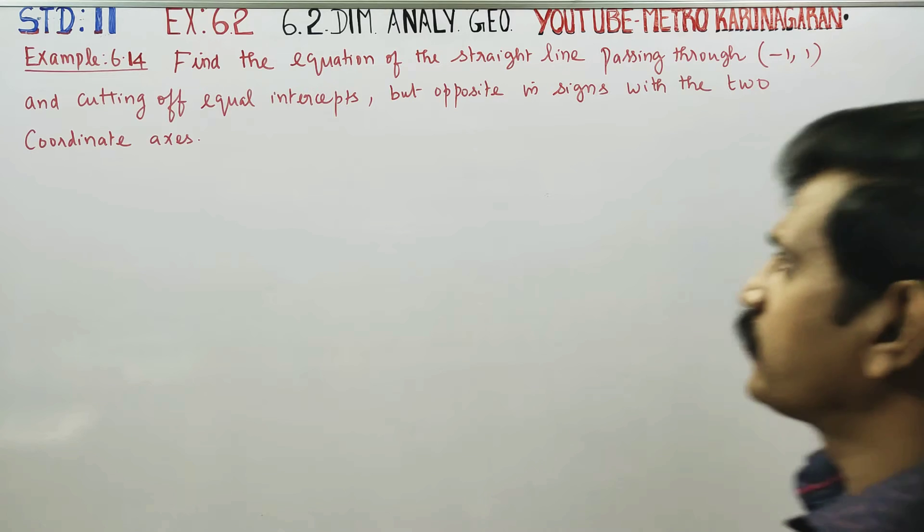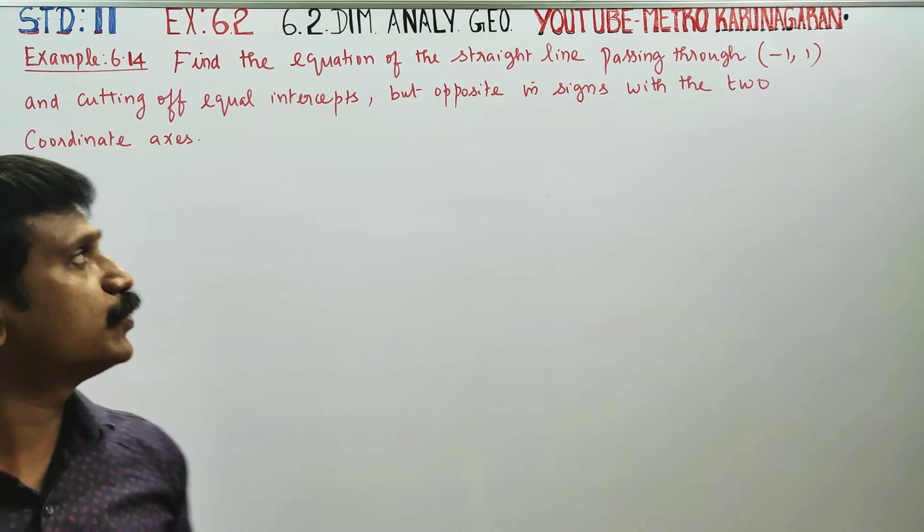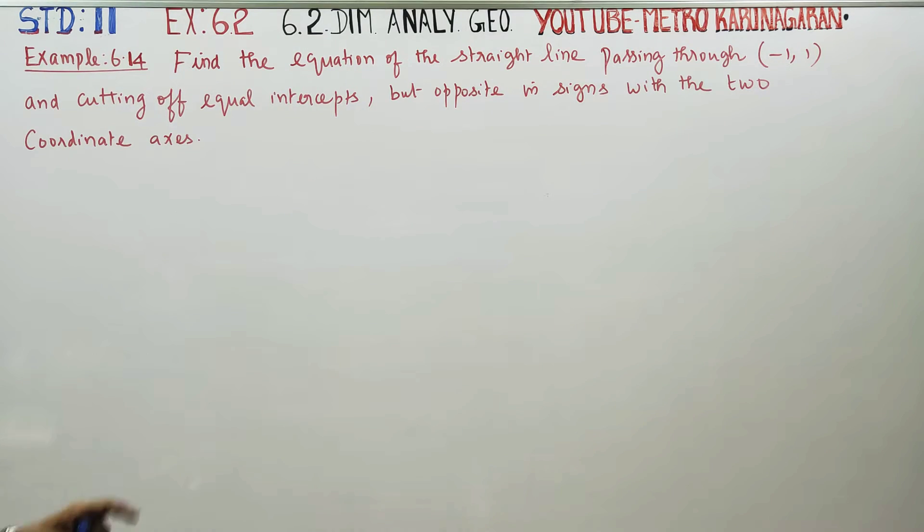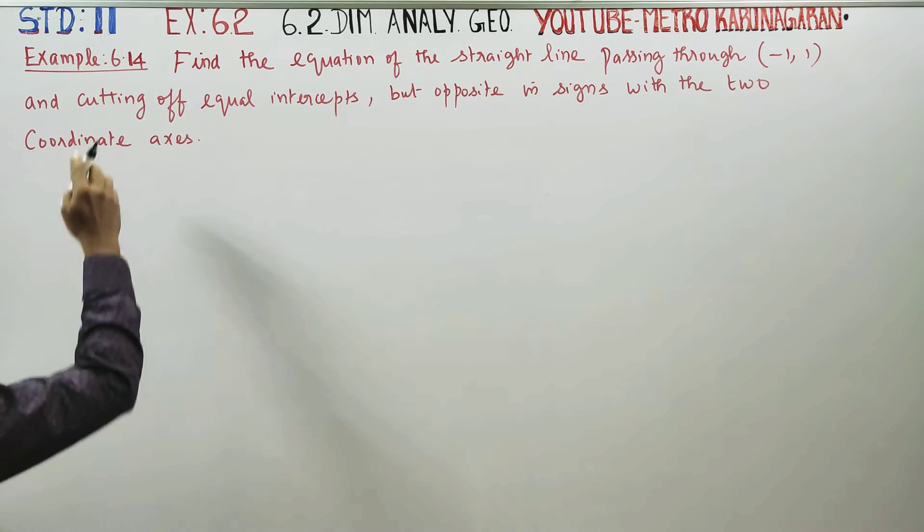In example 6.14, find the equation of the straight line passing through (-1,1) and cutting off equal intercepts. Equal intercepts.